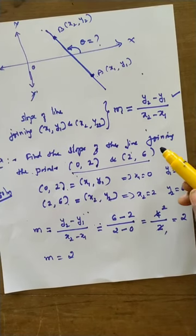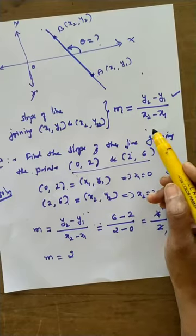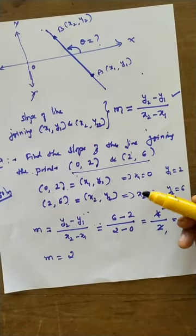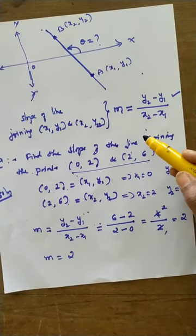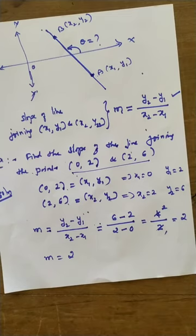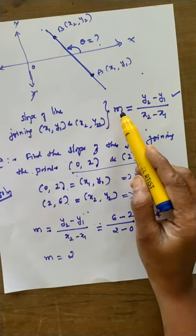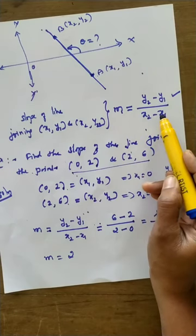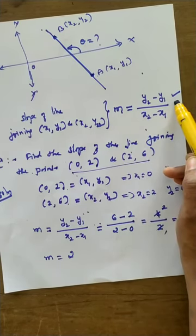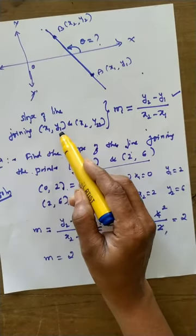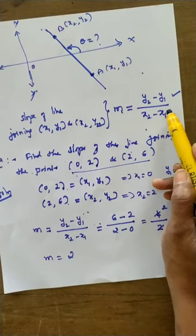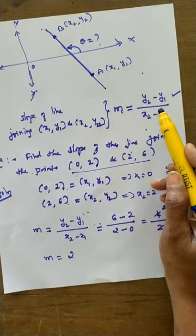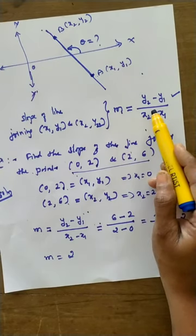By knowing the slope, you can see these two formulas. Next, we will see the equation of the straight line. There is also a third approach: when the angle of inclination is given, use M = tan θ; when line-joining points are given, use M = (y2 − y1) / (x2 − x1).